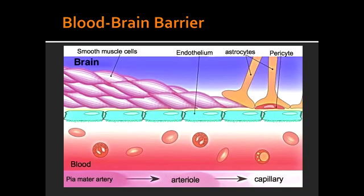What is the importance of the blood-brain barrier? The importance of the blood-brain barrier is to prevent circulating blood substances from reaching the cerebrospinal fluid and the CNS.